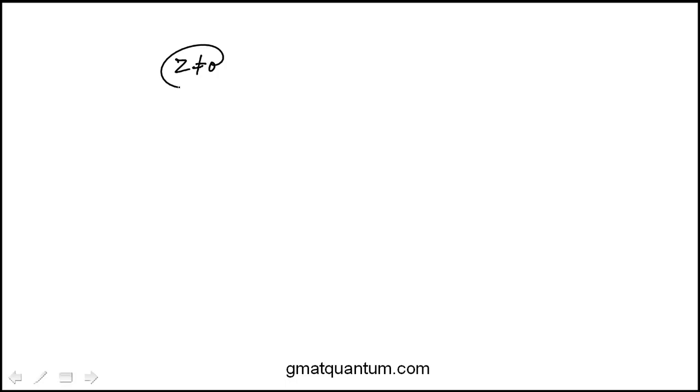Here we're told that z is not equal to 0, and they've given us this relationship between z and w. They want us to know what is w, simplify this.